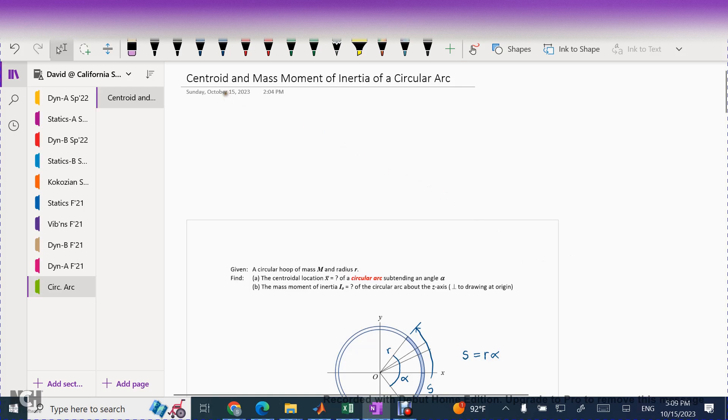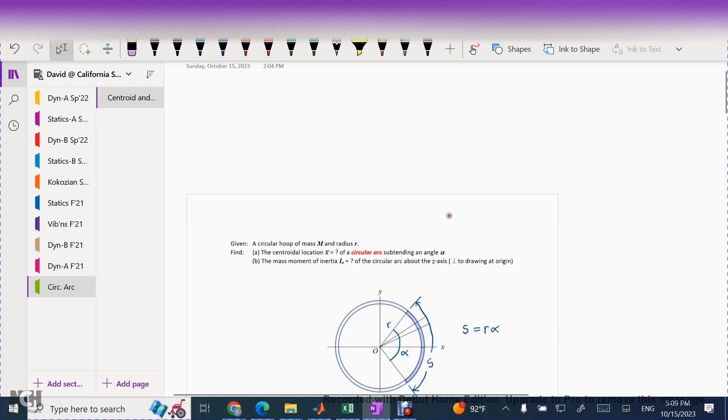At any rate, we're going to try and find the centroidal location as well as the mass moment of inertia of a circular arc. That is what I'm picturing here in the shaded portion. Here's what you're given. You're given a circular hoop that has a total mass of capital M. It has a radial dimension, little r.